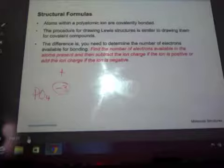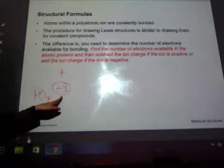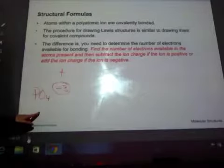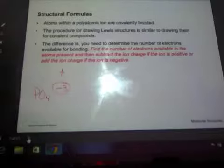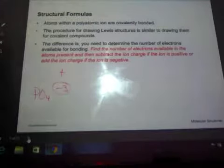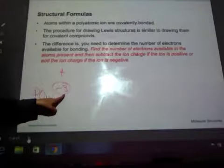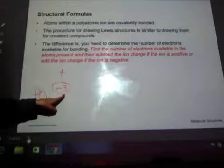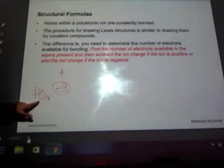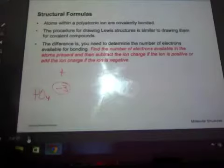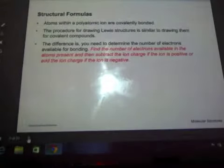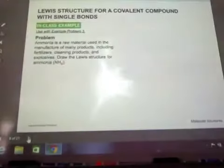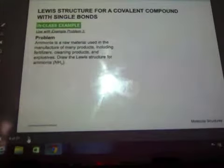If an ion has a negative 3 charge, what does that tell you? What does a negative charge mean? You're gaining electrons. So if I have a negative 3 charge, that means you're gaining 3 electrons. You're going to have 3 extra electrons because it has a negative 3 charge. And we'll do examples with that. So if you're looking at something that is an ion and has a plus or minus charge, you'll need to figure that part out.